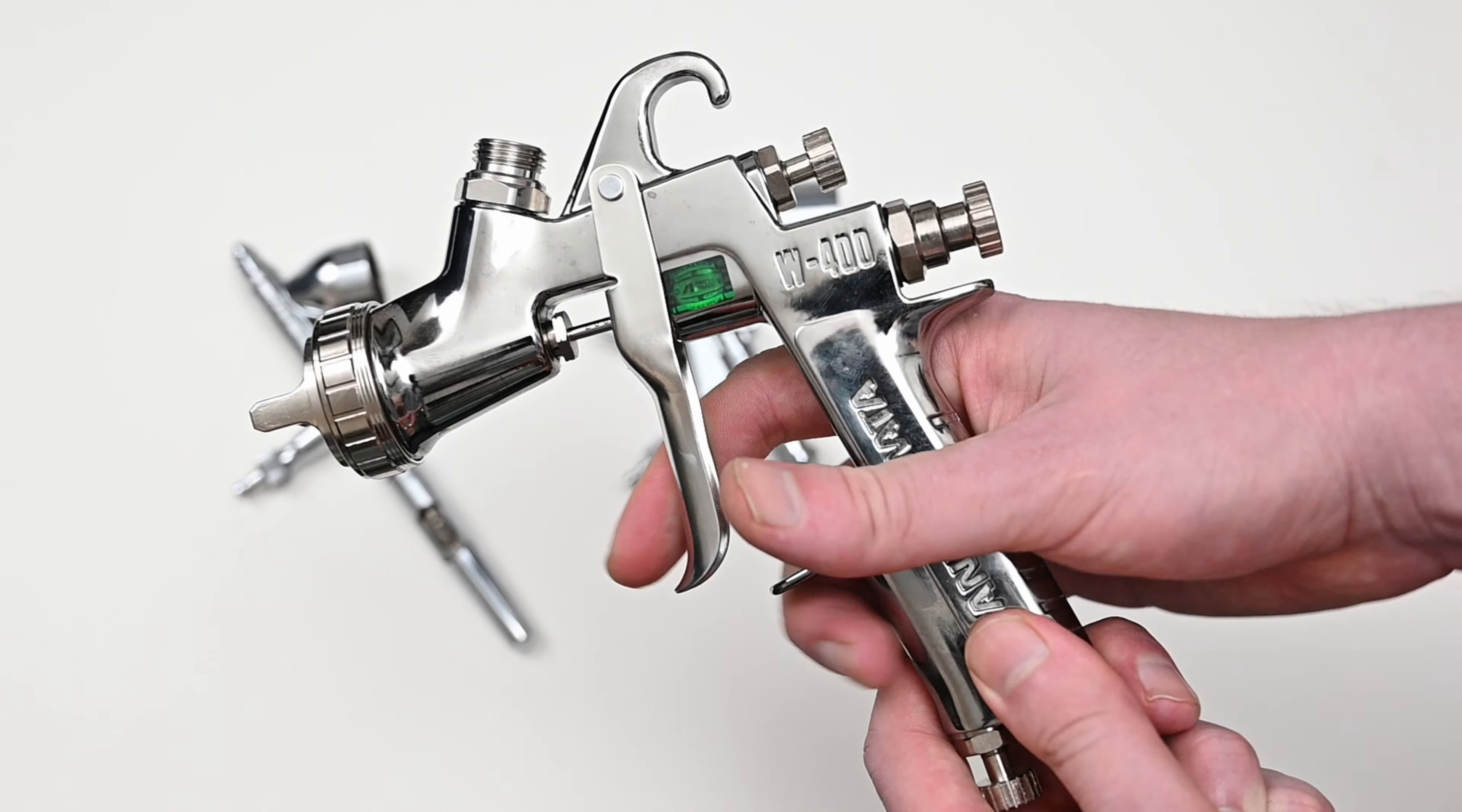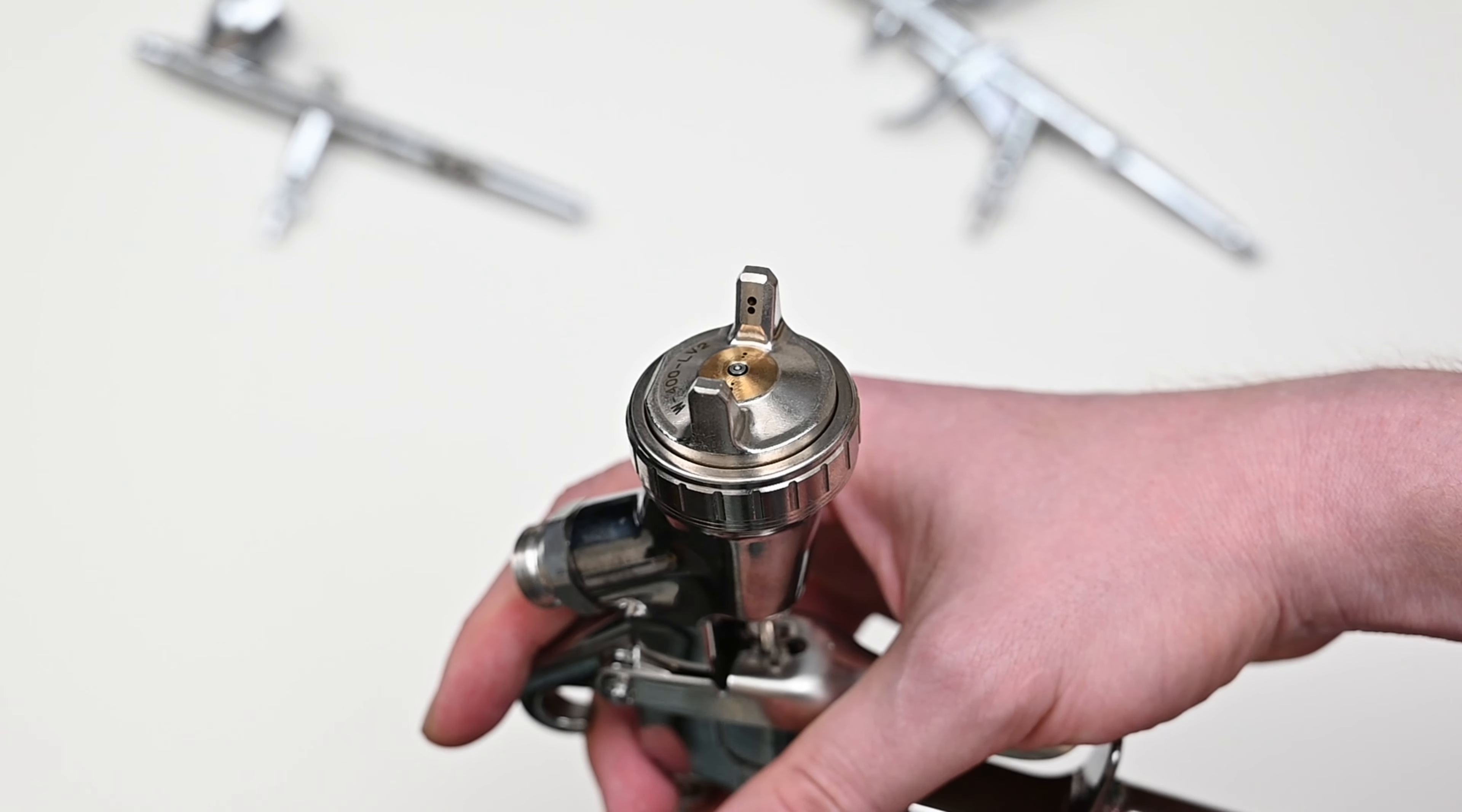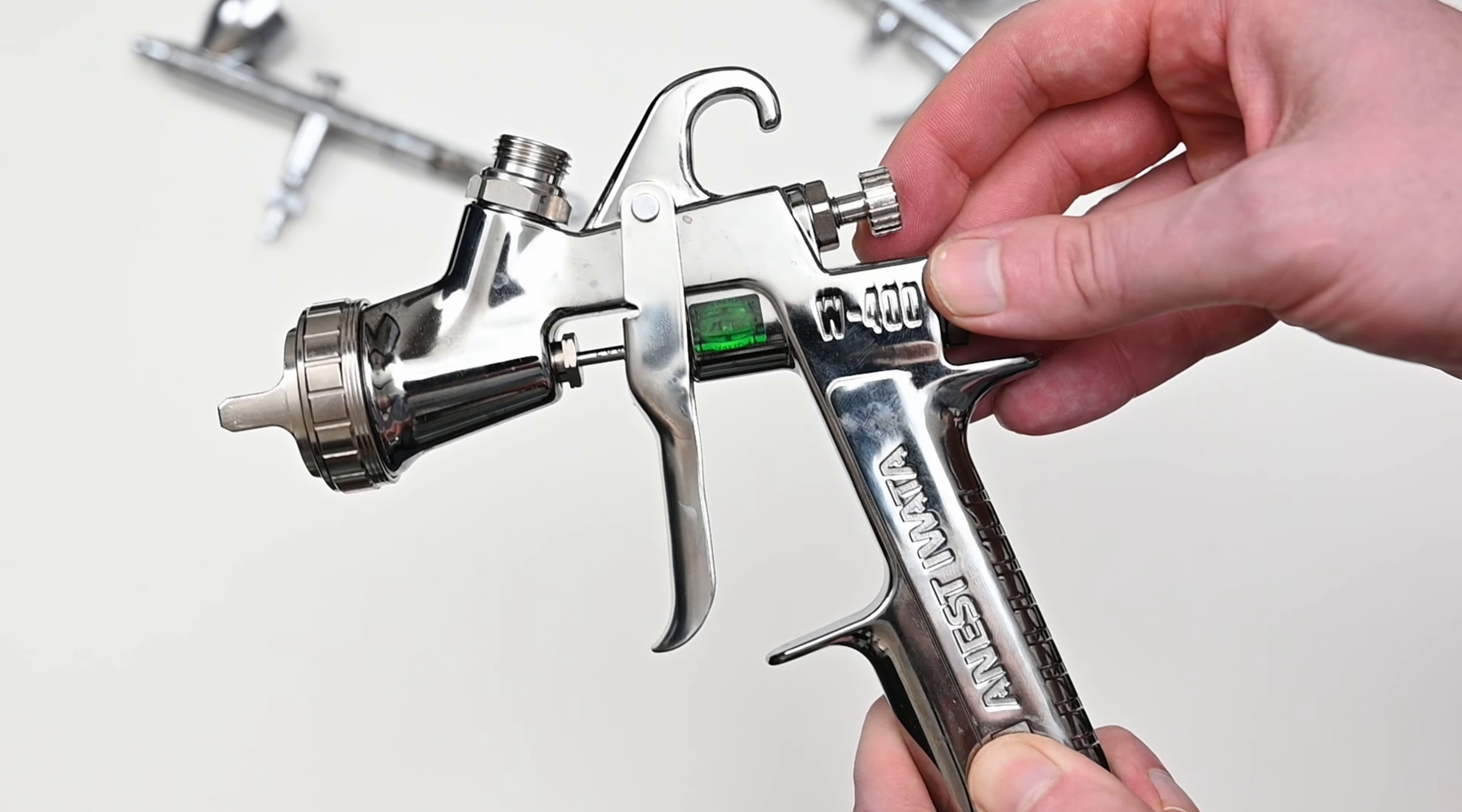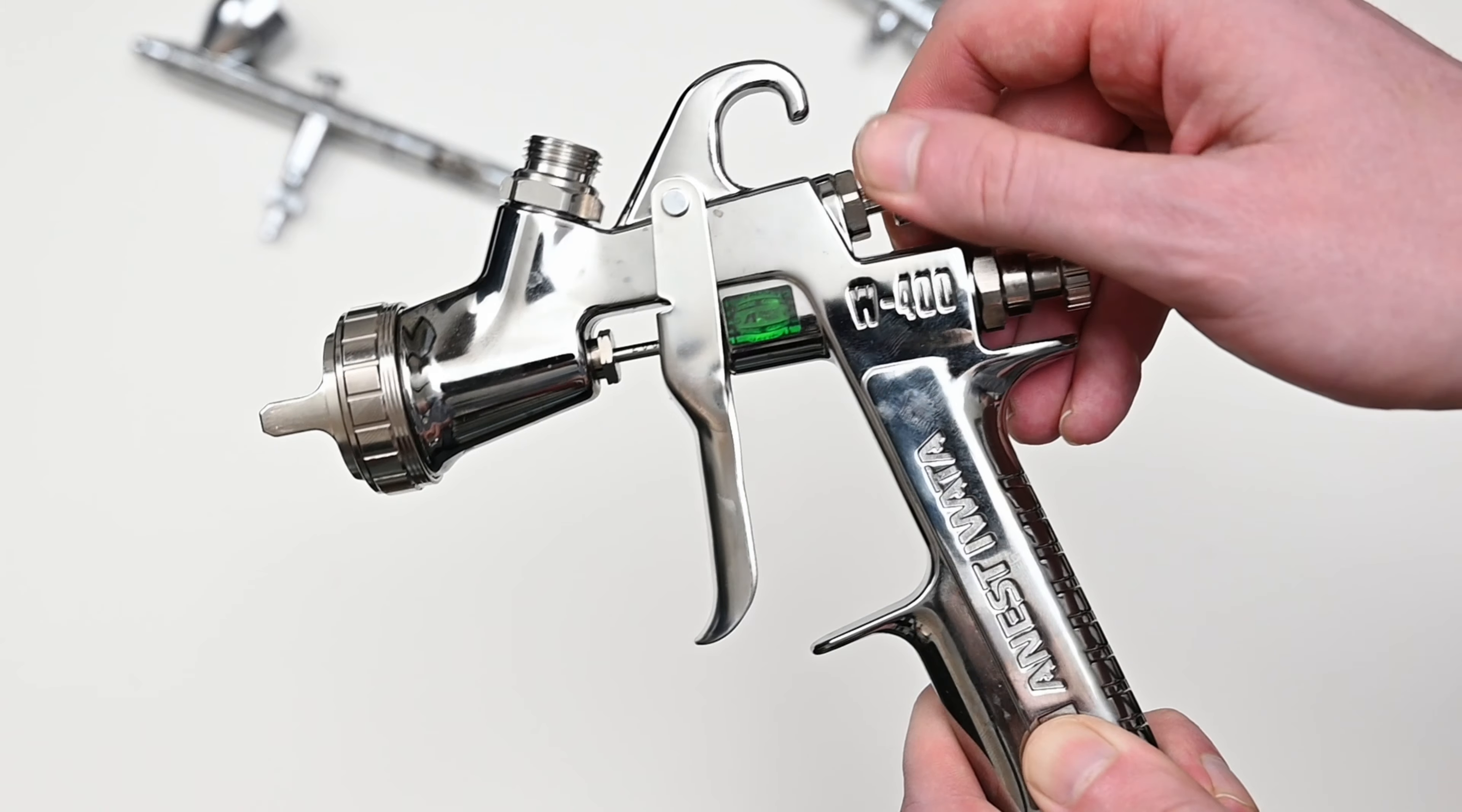This LVLP spray gun which stands for low volume low pressure has a much larger nozzle at 1.3 millimeters. It's equipped with a fan cap which sprays a very wide pattern so it makes it great for laying down a lot of paint and I'll mainly use this for varnishing a large painting at the end.